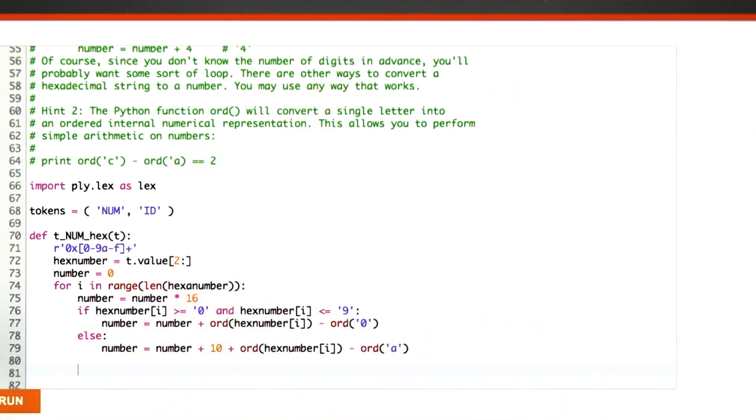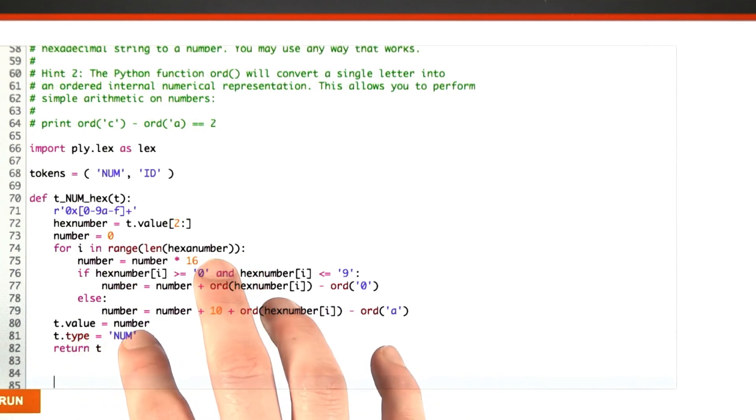I'm going to wrap up this function by setting the value of this token to the number and setting the type to num and returning the token itself. That's everything you have to do for this problem.